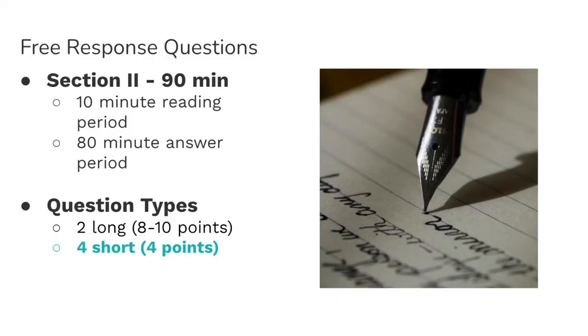The free response section of the AP Biology exam is actually the second half of the exam that you'll take after you take the multiple choice questions. In the free response part, which is section two, there are longer questions and short questions. Technically, you'll have a 10 minute reading period before you get started and an 80 minute answer period, but you can begin answering your questions at any time during the free response section. There's two question types. The first two are technically long free response questions, which I have another video about, and these are worth more points. Then there are four short or shorter free response questions. Each of these are usually worth four points.